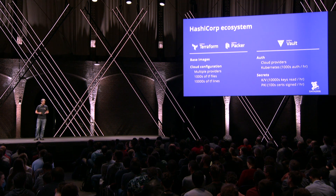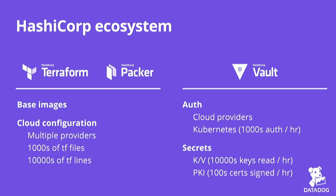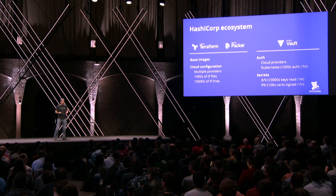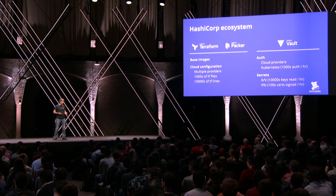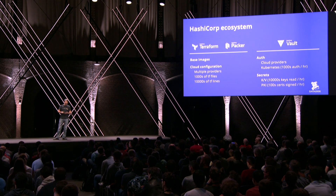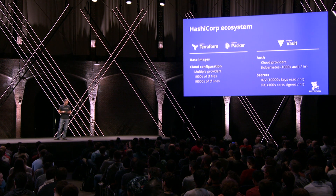Before diving into service discovery and the challenges we face, just a quick intro on how we've been using HashiCorp software for quite a long time now. We use Terraform and Packer heavily. We use Packer to build all our base images, and we use Terraform to configure all our cloud resources across different providers, such as AWS and GCP. Today, we have thousands of Terraform files, representing tens of thousands of lines of Terraform code.